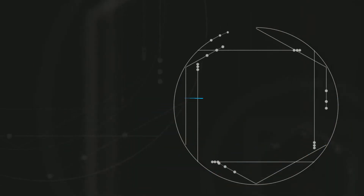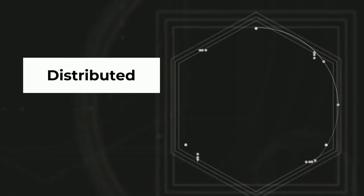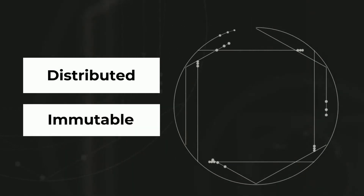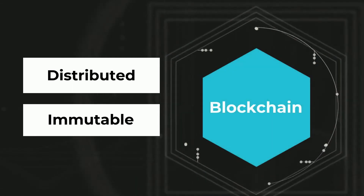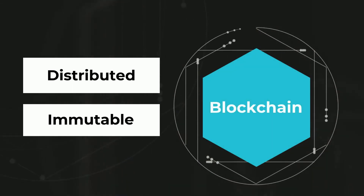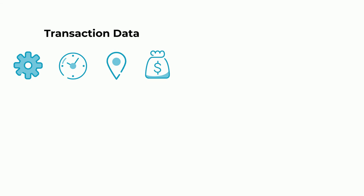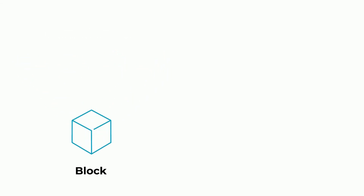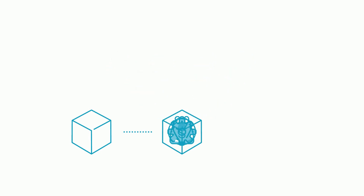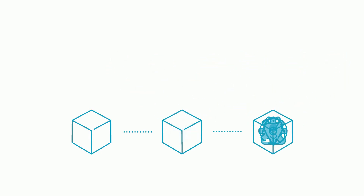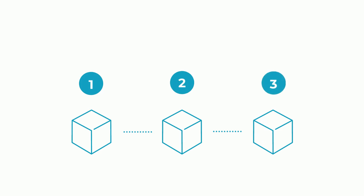Now that we know blockchain is a distributed and immutable ledger, why is it called blockchain? All the data related to a transaction is bundled together and stored in blocks. When new transactions are added, a new block is created. The blocks are linked or chained together in chronological order — hence the name blockchain.